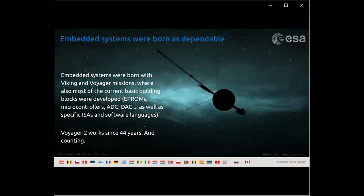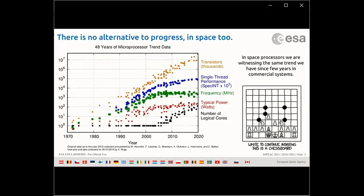Just to give an example of how this evolved: we went from 30 lines of code flown on the Mariner CN6 spacecraft in 1969 to the Mars Reconnaissance Orbiter in 2005 that flies more than 500,000 lines of code. This is combined with a general expansion of all the embedded systems we see in space as well as in ground applications. There's no alternative to progress.